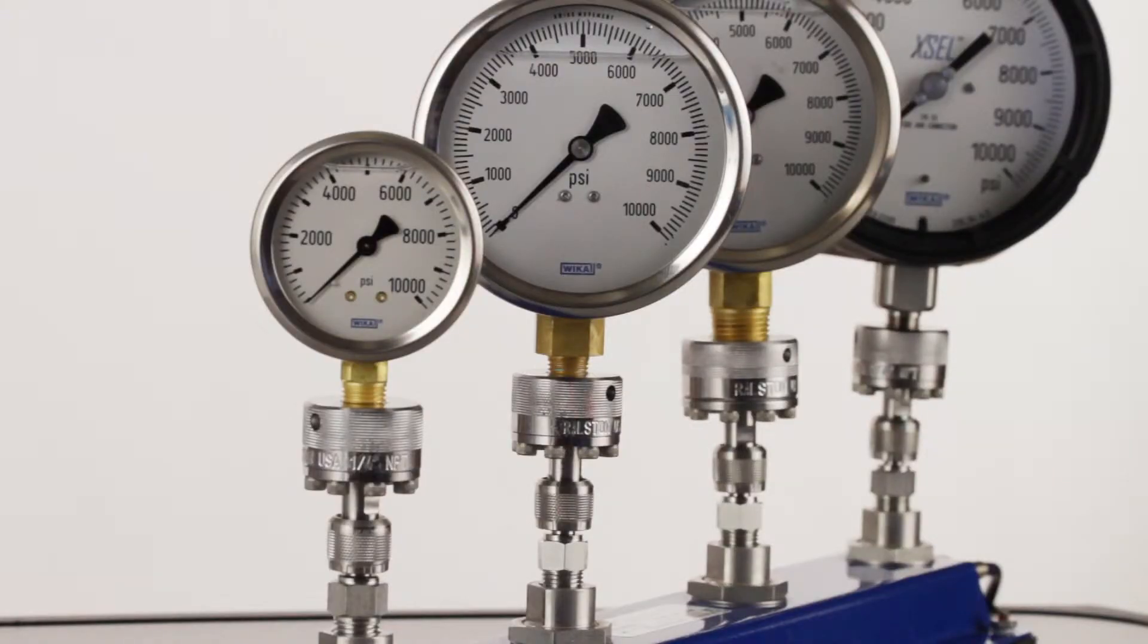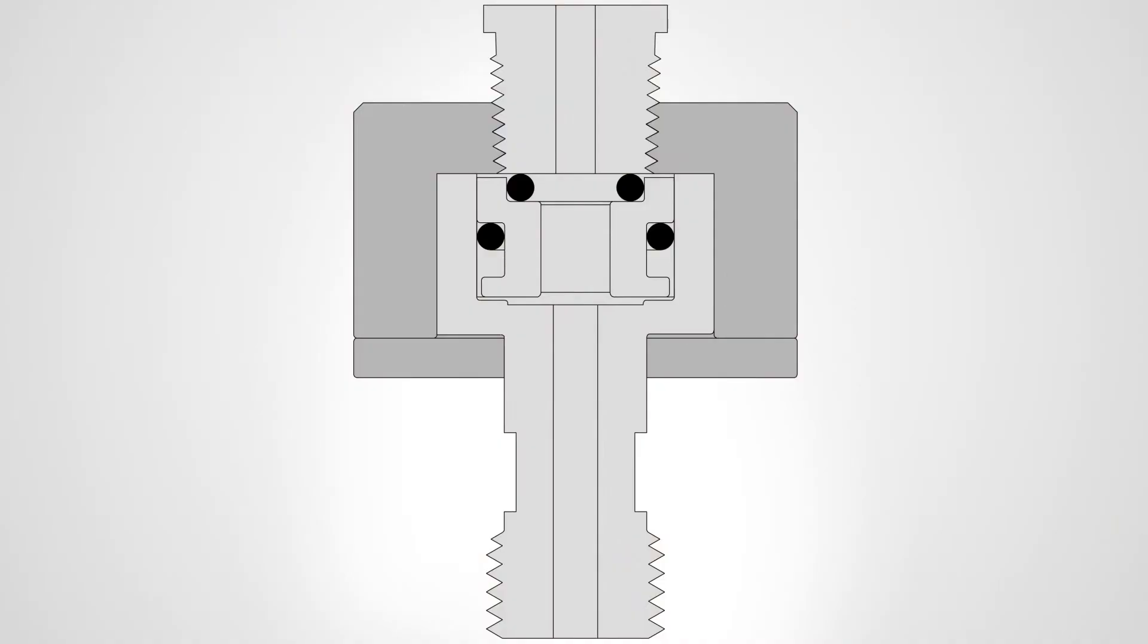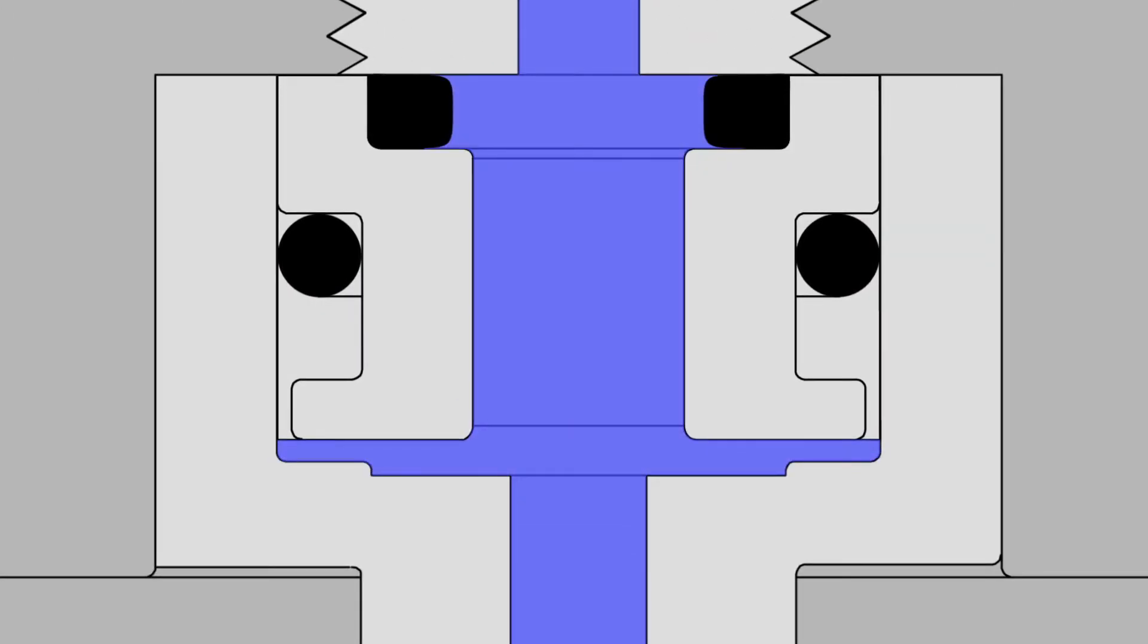When pressure is applied, you get a reliable seal due to an internal piston that forces an o-ring against the bottom surface of the gauge or other device.